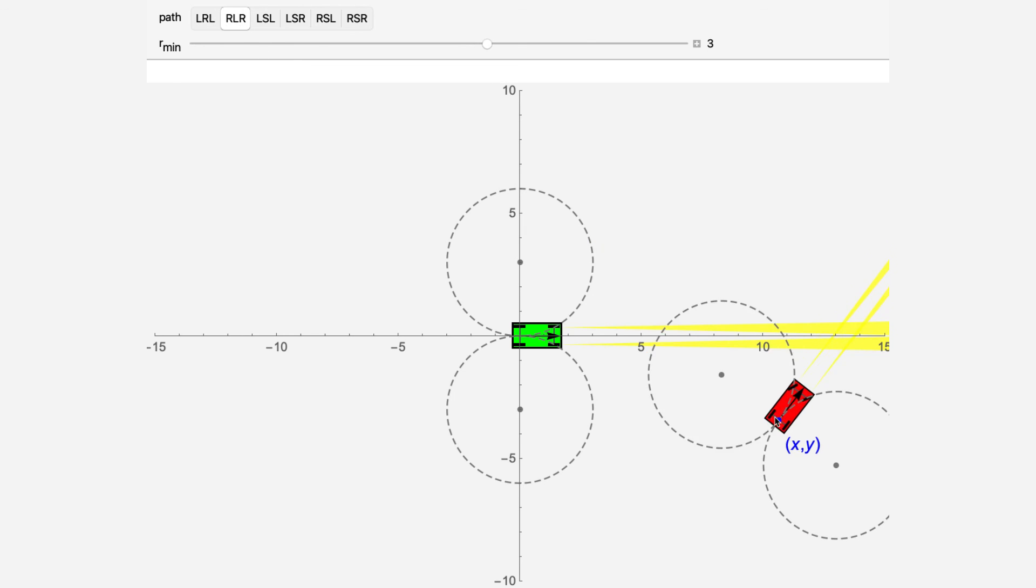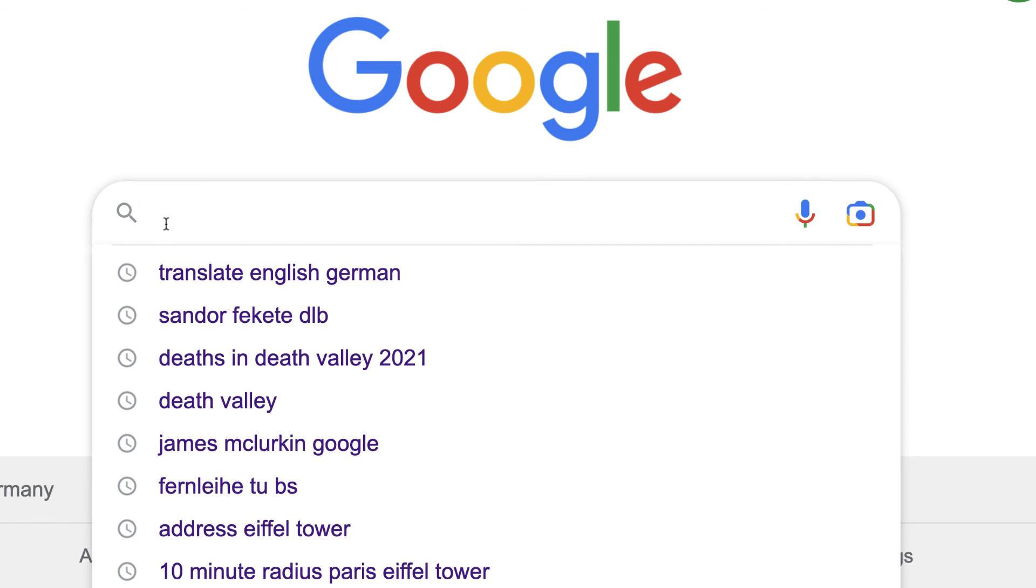The three path types, starting with R, are solved in a similar manner. Enjoy playing with the demo, available at demonstrations.wolfram.com, shortest path for the Dubin's car. And let me know what you think.